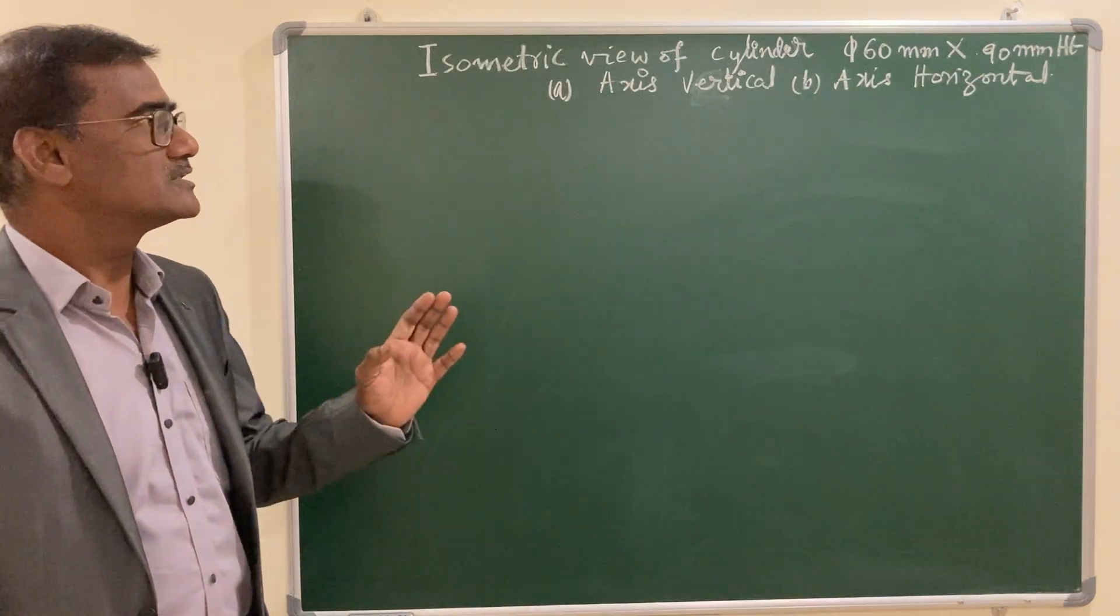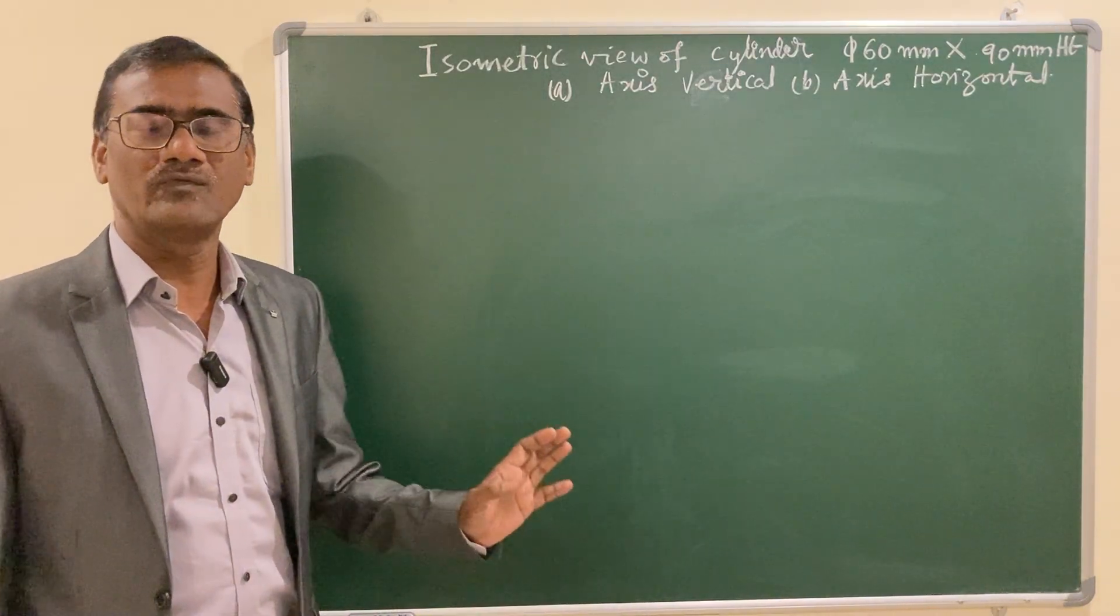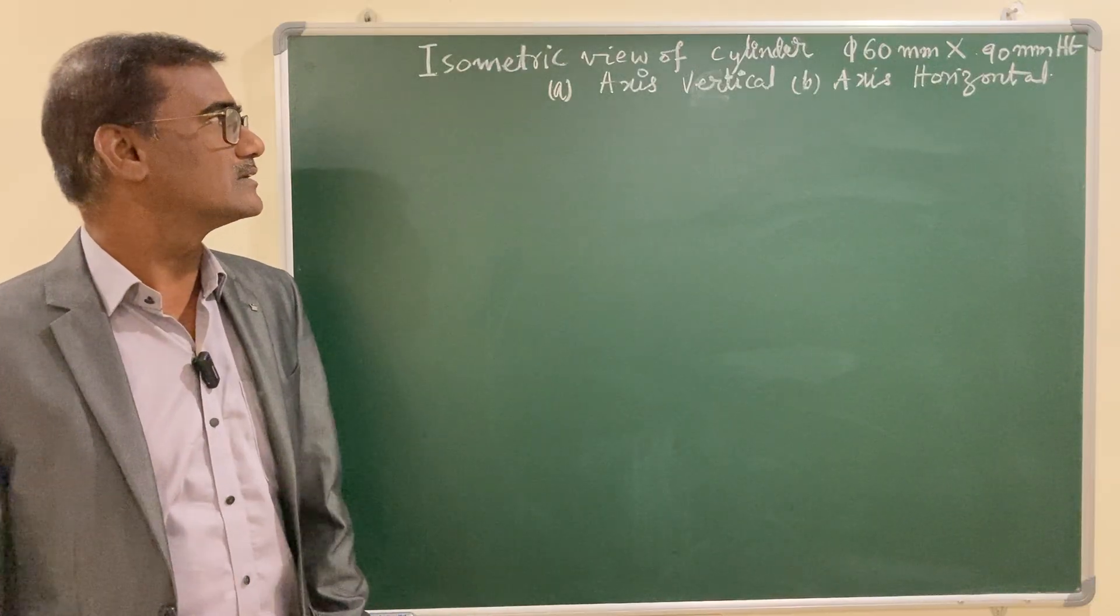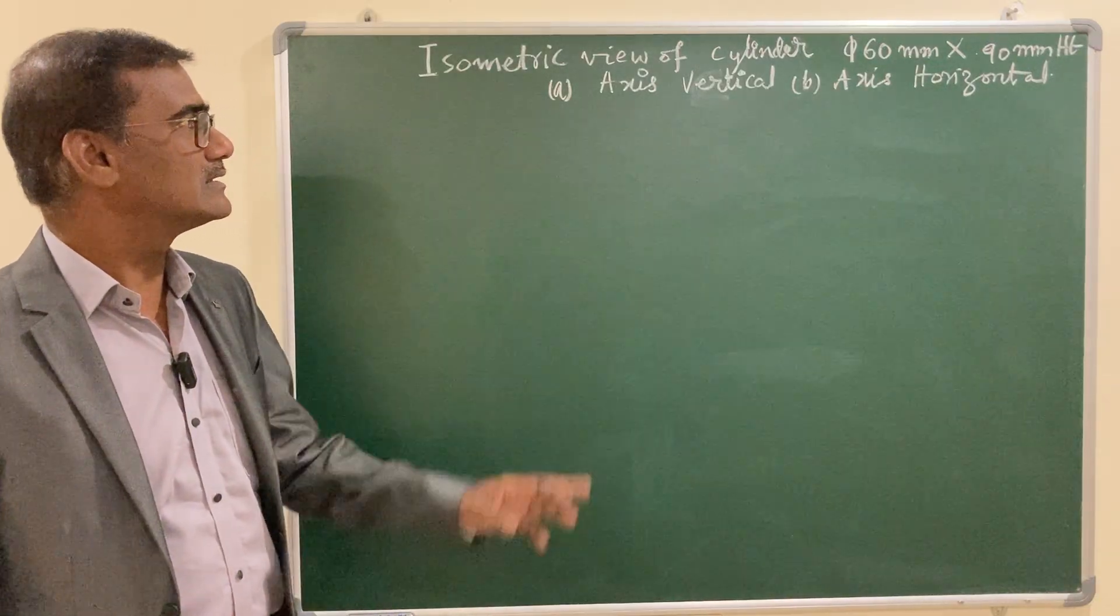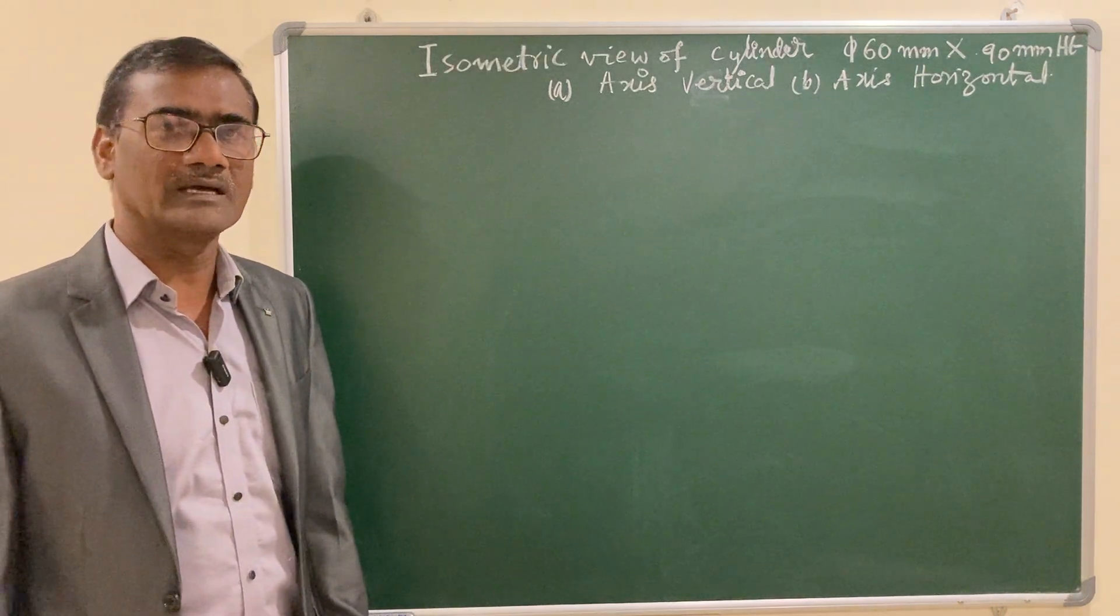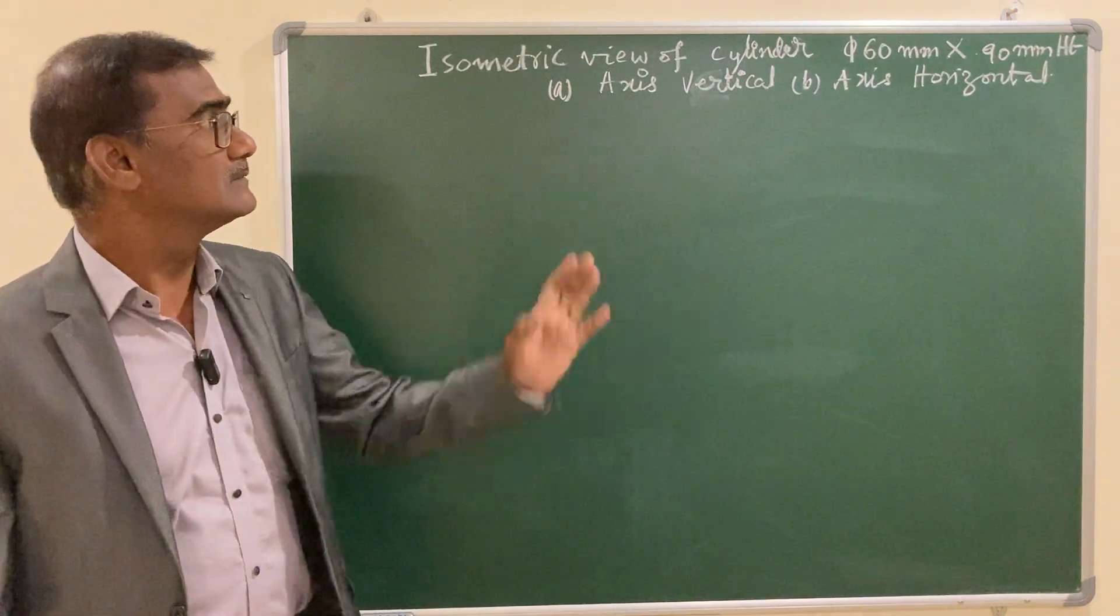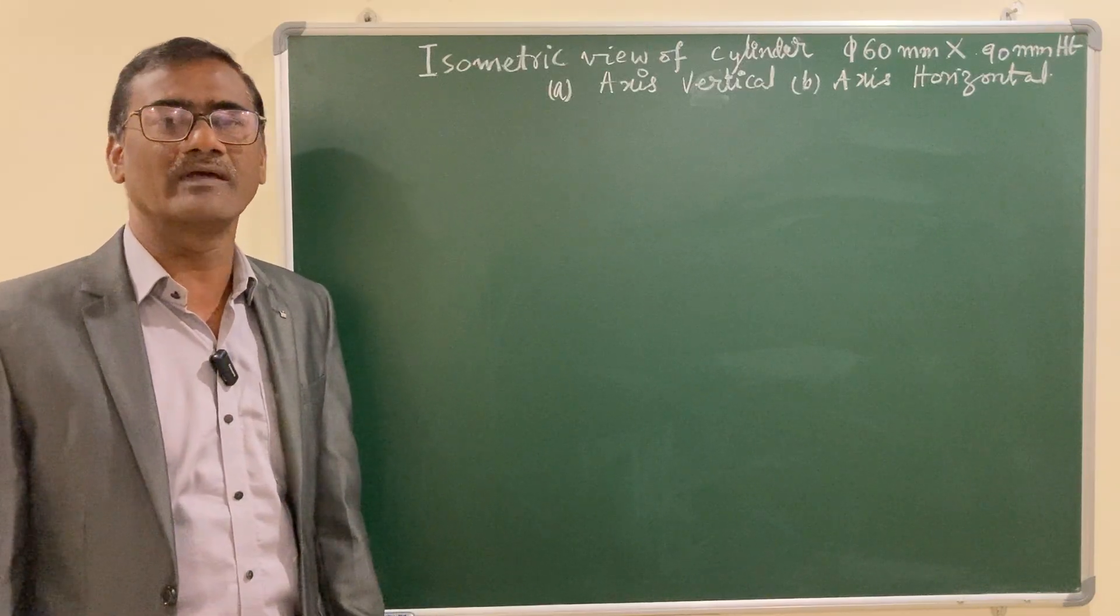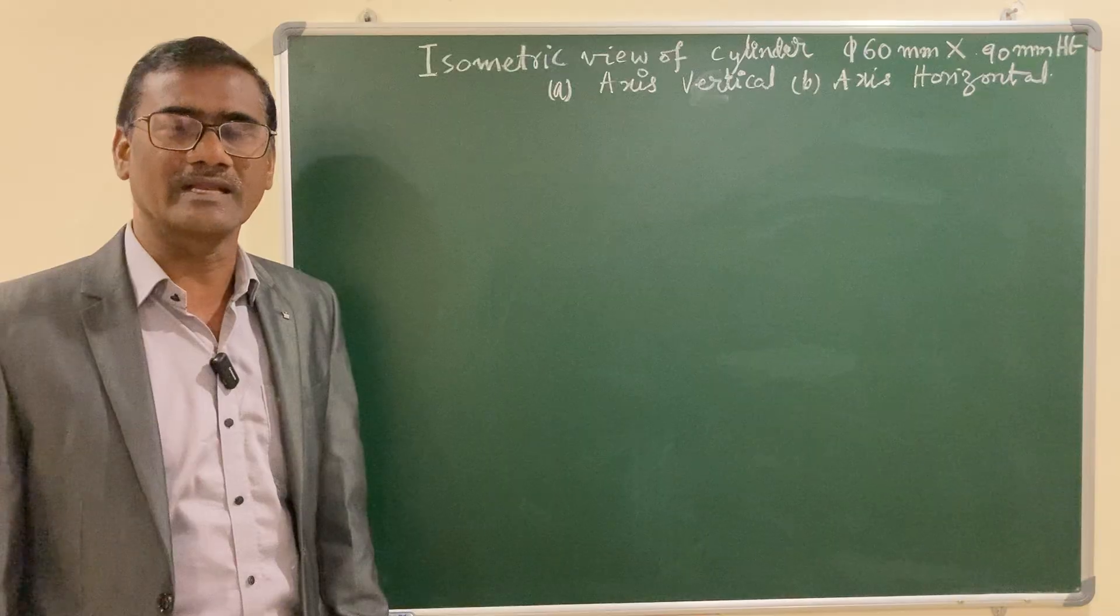In this particular case you need not go for orthographic projections. Straight away you can proceed to isometric view. First case is axis vertical. The top view of this cylinder is a circle. As you know, a circle in isometric view is an ellipse.